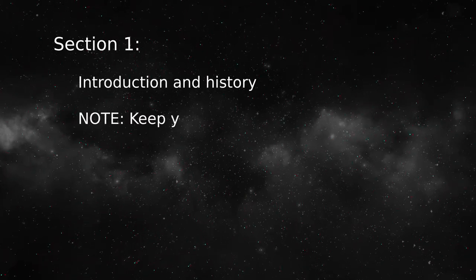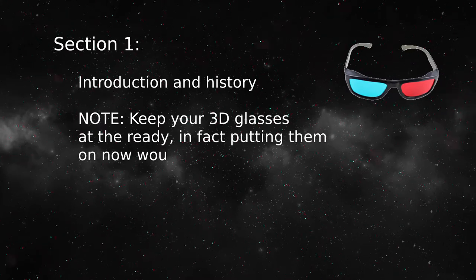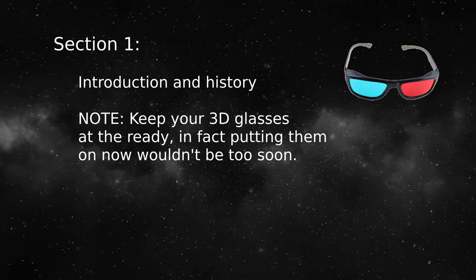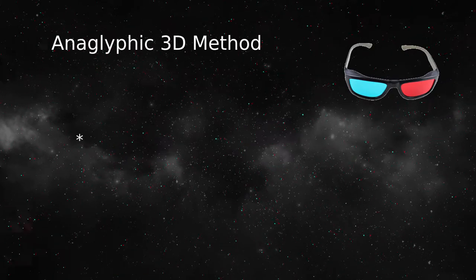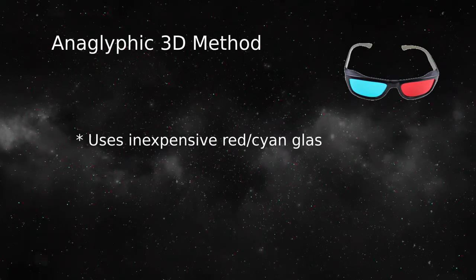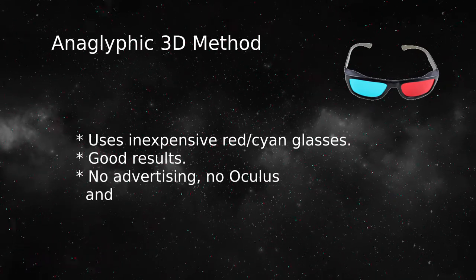This video is about three-dimensional computer-aided vision using the anaglyphic method. In this economical method, you wear glasses with red and cyan color filters to direct binocular images to your left and right eyes. It's very simple. You put on the glasses and you see three dimensions.